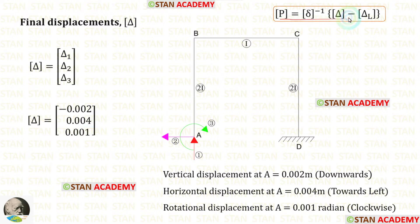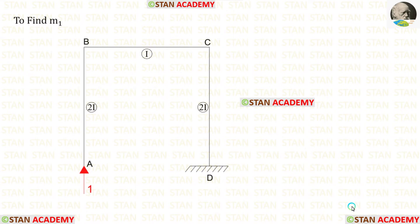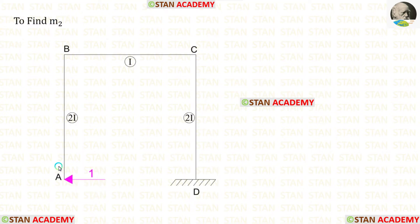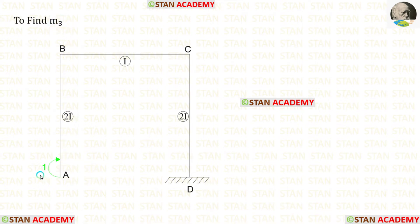Now let us find the flexibility matrix using the unit load method. We apply a unit load in the first coordinate and find the bending moment M1, then apply a unit load in the second coordinate and find M2, and finally apply a unit moment in the third coordinate and find M3.